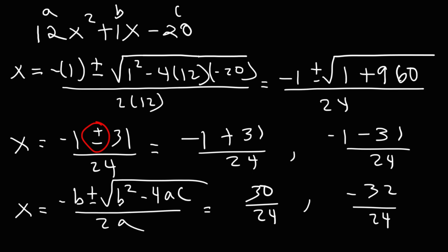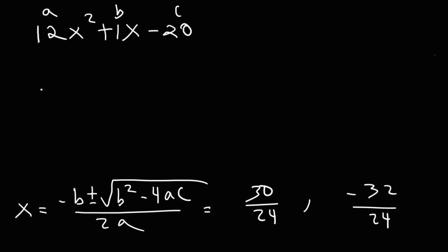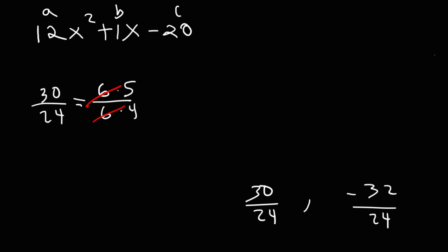So what we need to do at this point is reduce those two fractions. So 30 over 24. 30 is 6 times 5. 24 is 6 times 4. And so we could cancel a 6. So x is equal to 5 over 4. That's one of the answers. For the other one, we could say that 32 is 8 times 4, 24 is 8 times 3. So if we cancel, we get that x is negative 4 over 3.